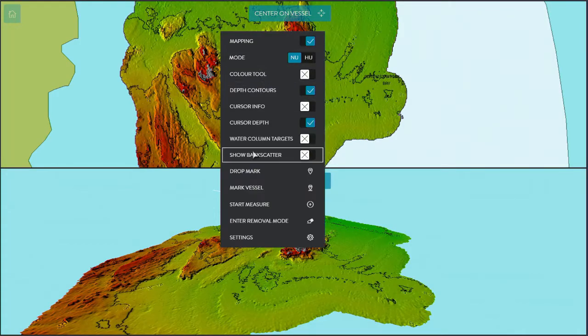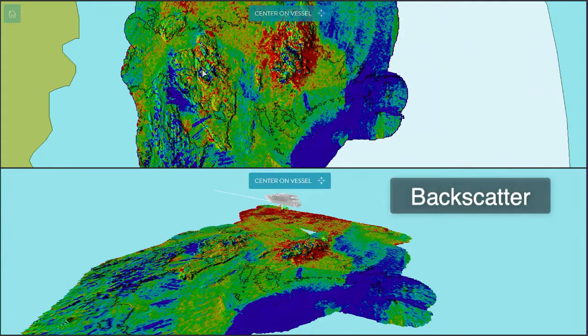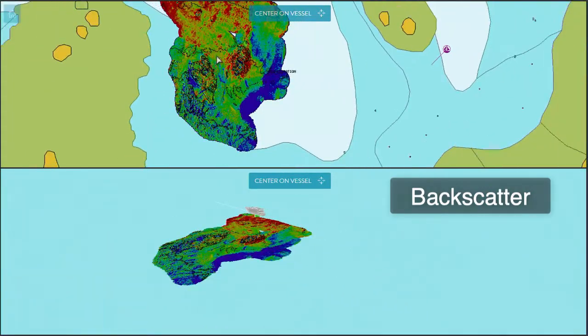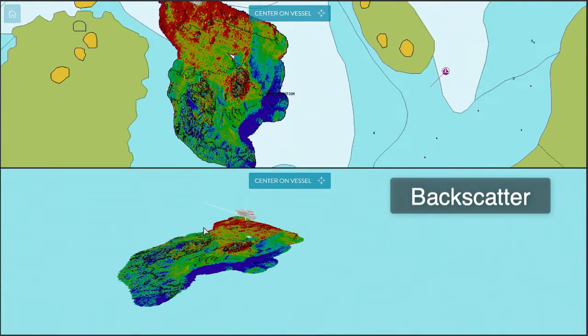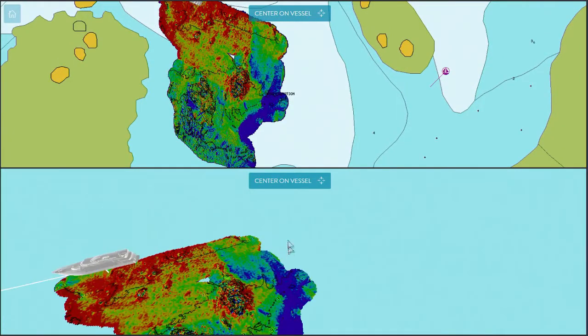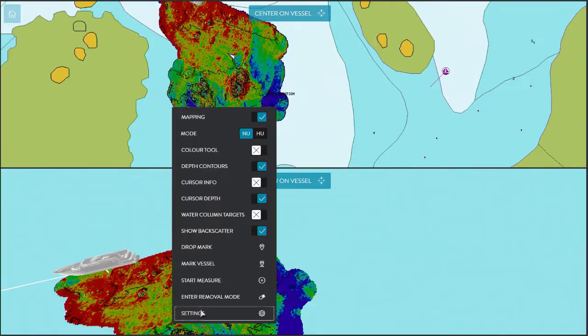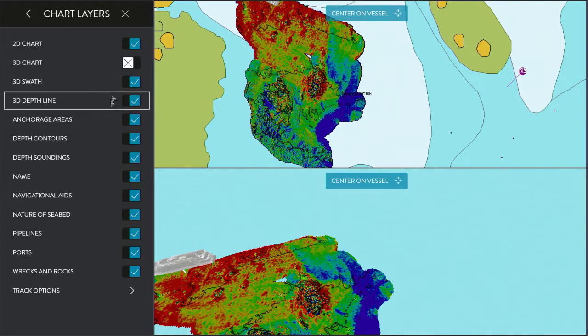Our WASP W3 can also show backscatter which gives us an accurate indication of the hardness or softness of the seafloor. In the red areas the seafloor is hard and rocky. The blue areas are soft and indicate a muddy area.